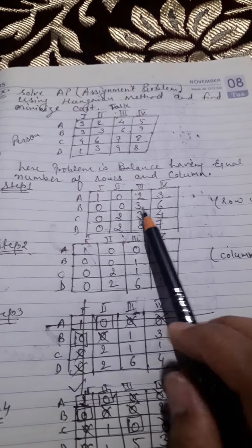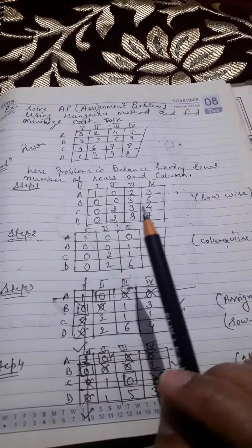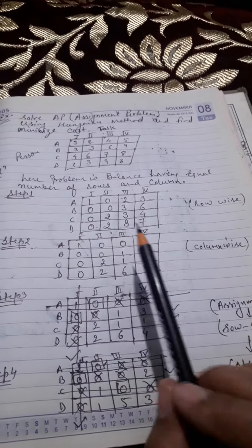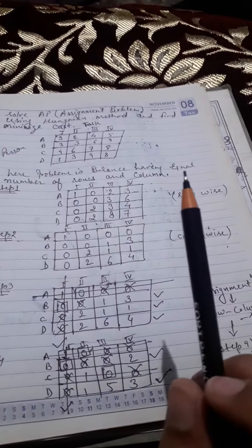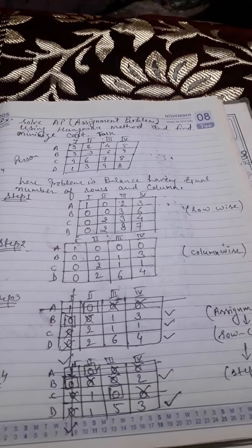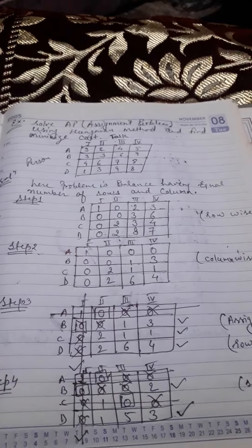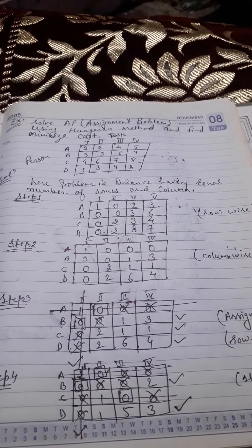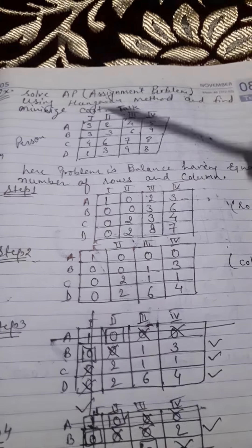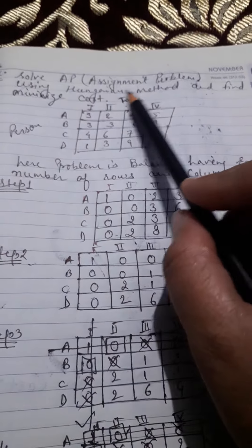Good morning students. After the first video of the assignment problem, we go through all the steps of the Hungarian method, which is the only method to solve the assignment problem. Here we are doing it by illustration so that we are able to go through all the steps of how we are performing. Let's take an example: solve the assignment problem using the Hungarian method.